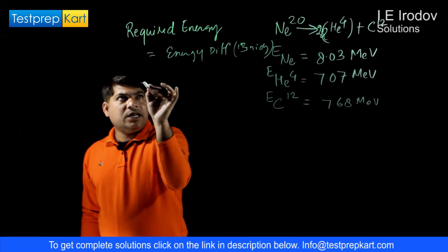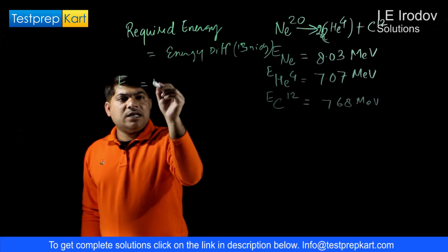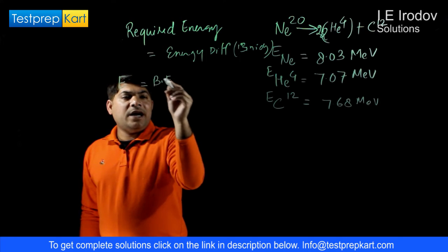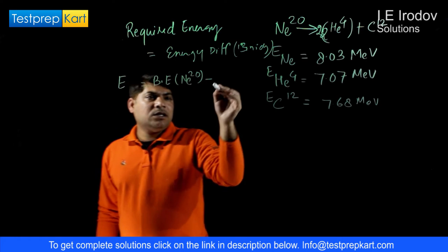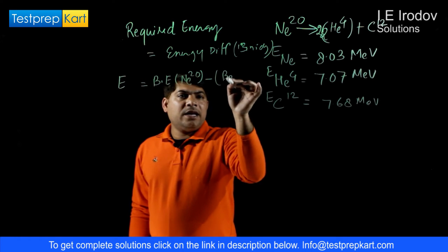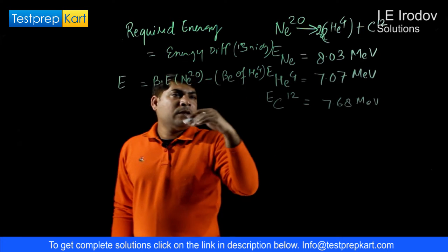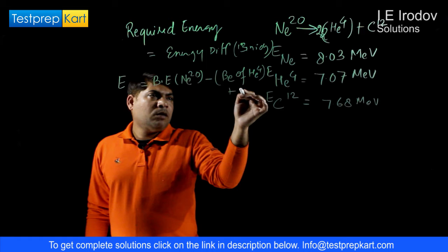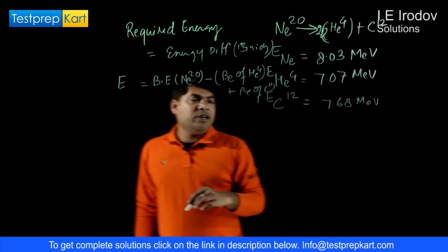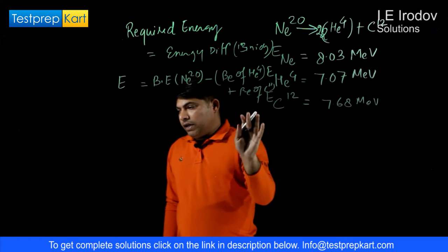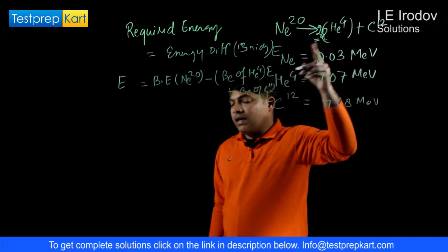This energy required, let us take E, can be written as binding energy of Neon-20 minus binding energy of helium plus binding energy of Carbon-12. Here we need to look very carefully that there are 2 alpha nuclei.